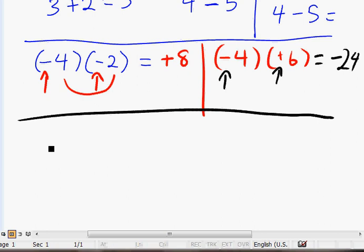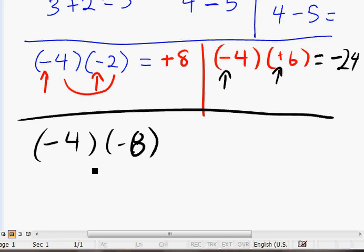Let's do a few more. How about a negative 4 times a negative 8. Same sign, negative and negative, we will get a positive 32.